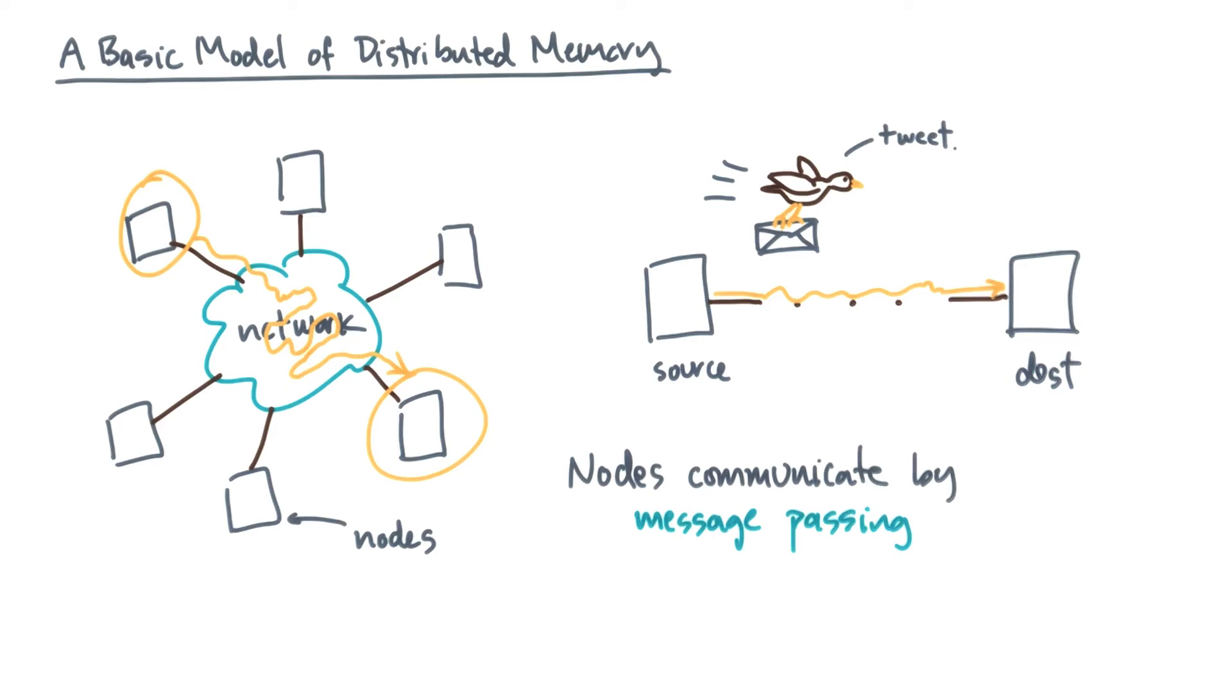In contrast to shared memory, where we read and write shared variables, this style of parallel communication is called message passing.